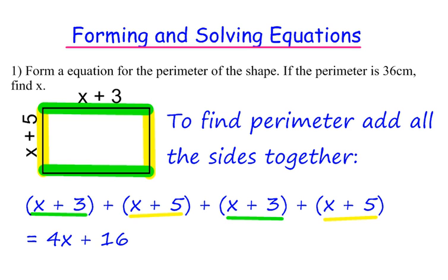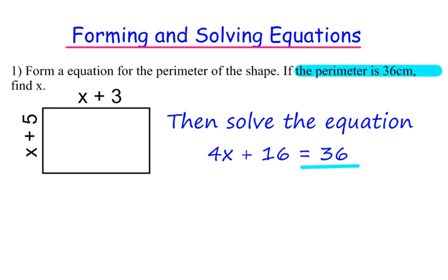Now let's look at the second half of the question. 4x plus 16 is the equation for the perimeter. So we can form an equation by making that equal to 36. 4x plus 16 equals 36. We can take 16 off both sides, so 4x equals 20. And then we can divide both sides by 4 to give us x equals 5.